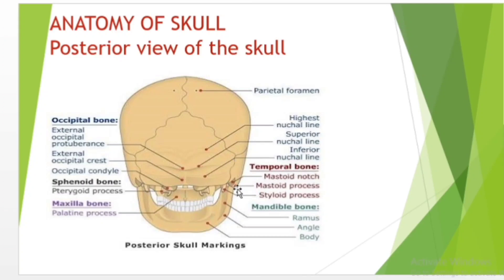Look at this area — it shows the mastoid notch. It is a deep notch located on the medial side of the mastoid process. It runs within the sagittal plane, running medial to the sternocleidomastoid, anteriorly as well as posteriorly on the posterior side of the mastoid process. It gives attachment to the posterior belly of the digastric muscle. The mastoid process is a smooth conical projecting bone located at the base of the mastoid area of the temporal bone. It allows the attachment of muscles such as the occipitofrontalis muscle as well as certain muscles of the neck like the sternocleidomastoid and splenius capitis muscle.